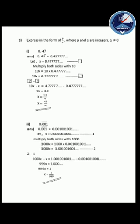Now subtract equation one from equation two. When subtracting the two equations, first subtract LHS, then subtract RHS. So 10X minus X equals 4.777 minus 0.4777. So 10X minus X equals 9X. Then subtracting the decimals: 4.77 minus 0.477 gives 4.3. So 9X equals 4.3. Taking 9 to the right side: X equals 4.3 divided by 9. Removing the decimal by multiplying numerator and denominator by 10, you get X equals 43/90.